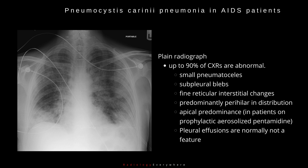Distribution is predominantly perihilar, with apical predominance in patients on prophylactic aerosolized pentamidine. Pleural effusions and lymphadenopathy are normally not a feature.